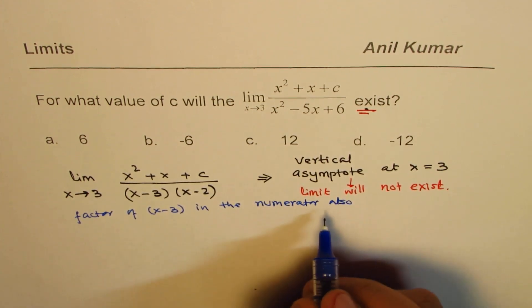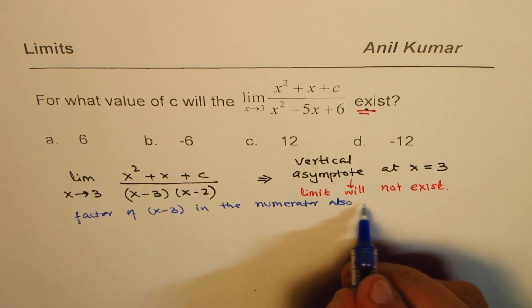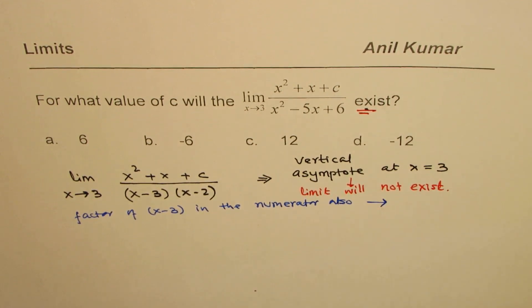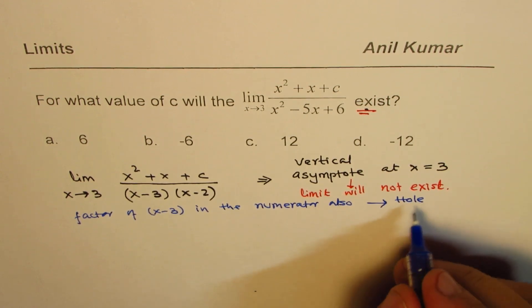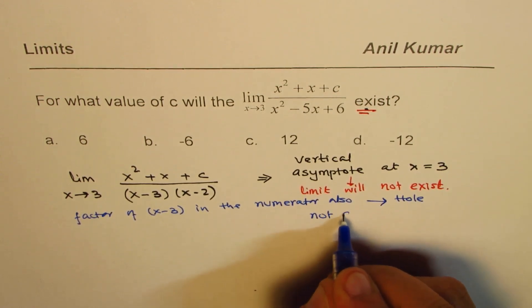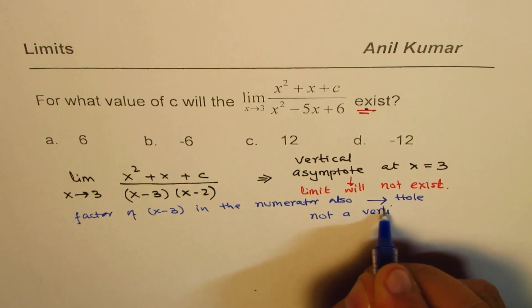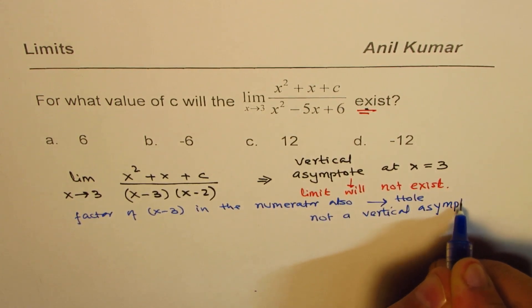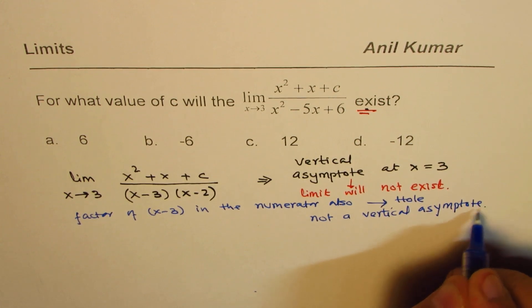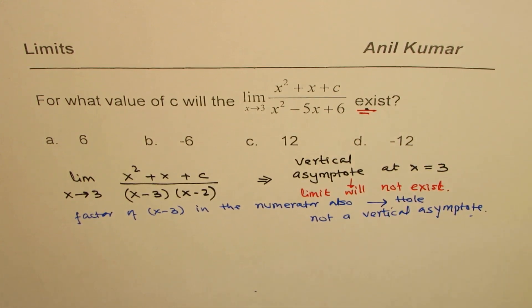How will that change the situation? Well, in that case, we are looking at a hole, not a vertical asymptote. You understand the concept. Now, if there is a hole, then the limit will exist. So that is the concept.